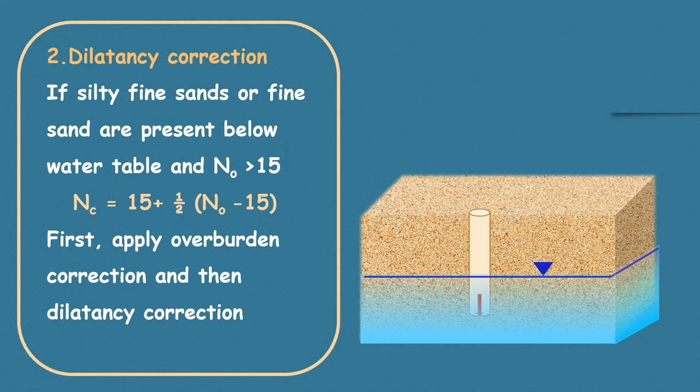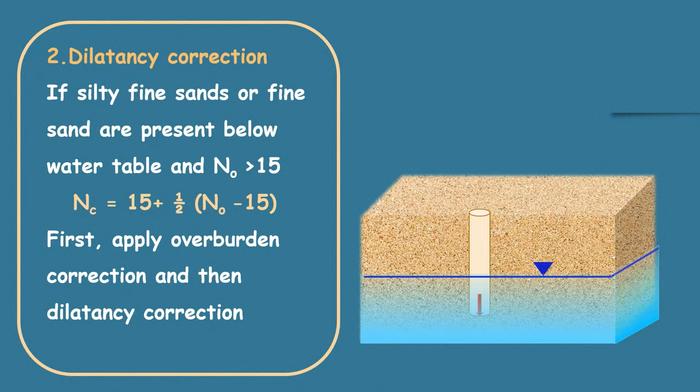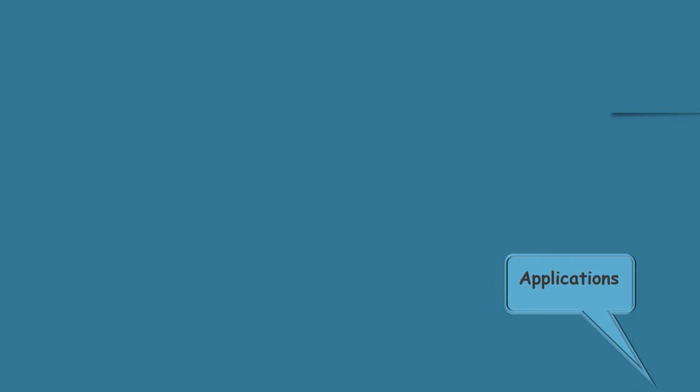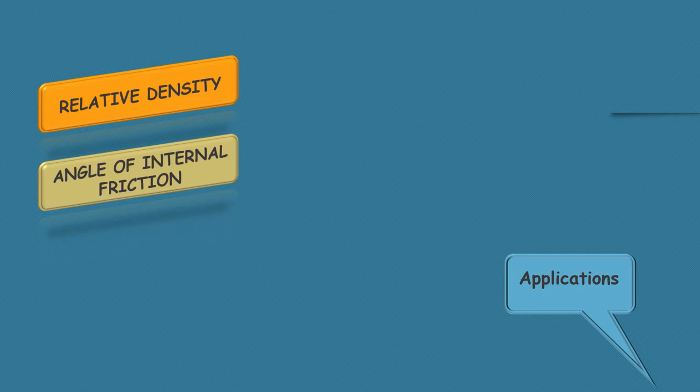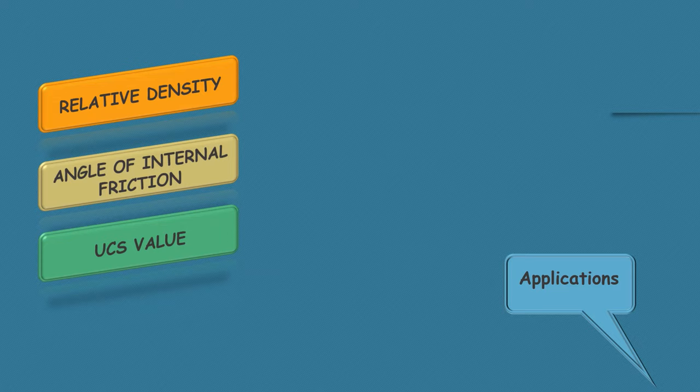Fine. What could we do with this SPT n value? Let's learn their applications too. Using certain standard correlations from the corrected n value, you can actually predict relative density and angle of internal friction in case of cohesionless soil. You can also predict UCS value in case of cohesive soil. And sometimes even you can predict dynamic properties too. Thank you.